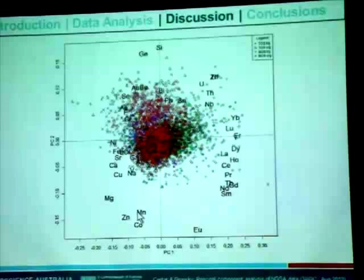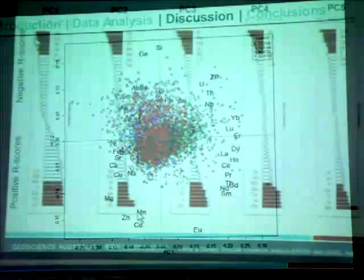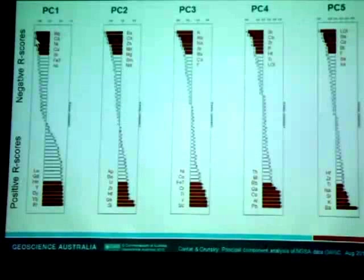Another way of looking at these loadings is to rank them per principal component. The negative scores of PC1 are represented by calcium, magnesium, copper, nickel, strontium, et cetera. The positive scores are rare earth elements, as I showed. You can see how strong this signal is by the extent of these bars compared to just about any other bar in the other principal components.